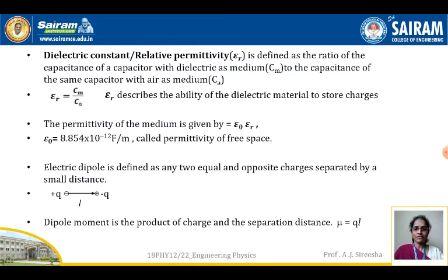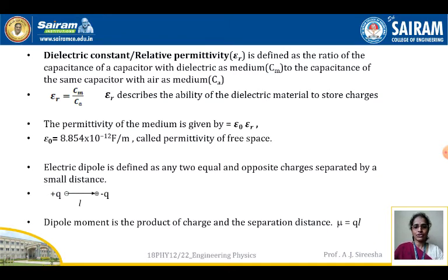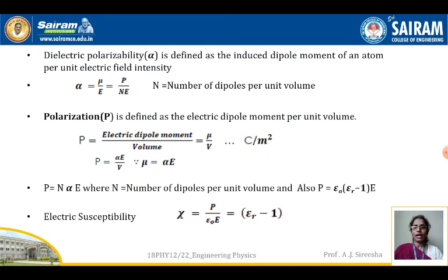The permittivity of a medium is given by ε₀ · εᵣ, where ε₀ = 8.854 × 10⁻¹² F/m, called the permittivity of free space — this value is used in numerical problems. An electric dipole is defined as two equal and opposite charges separated by a small distance. The dipole moment μ is the product of charge and separation distance: μ = q · l.